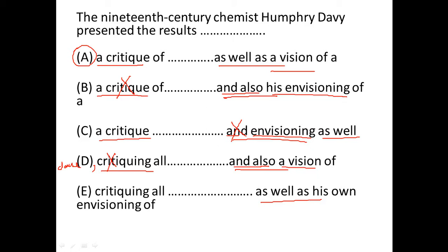In E as well we have comma verb-ing, and before that we have a clause. That is cause and effect structure, and we don't have cause and effect in the sentence. Again, critiquing as well as his own envisioning which is not parallel, and his own is redundant. So again option E is wrong.